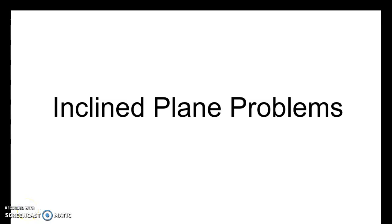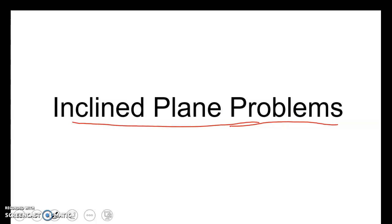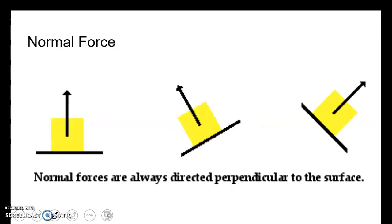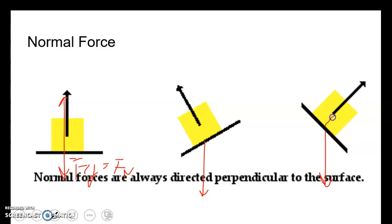The last group of problems to discuss are inclined plane problems, especially those that include friction. Normal force is always perpendicular to the surface. On a horizontal surface, normal force and gravity are the same. But on inclined planes, they are not. Gravity goes straight down, while normal force is perpendicular to the surface. When we look at the math of inclined planes, you're going to see some differences.